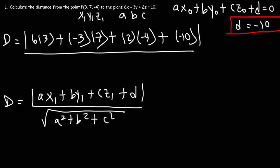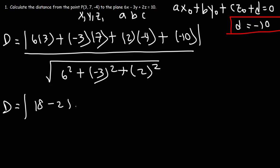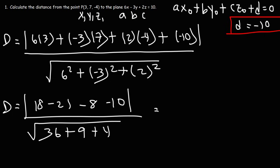All divided by the square root of A squared. So that's 6 squared plus B squared, that's negative 3 squared, plus C squared, which is 2 squared. 6 times 3 is 18. Negative 3 times 7 is negative 21. 2 times negative 4 is negative 8, and then we have minus 10. 6 squared is 36, 3 squared is 9, 2 squared is 4. 18 minus 21, that's negative 3, minus 8, that's negative 11, minus 10, that gives us negative 21. 36 and 4 is 40, plus 9, that's 49.